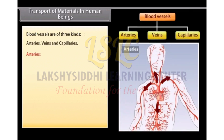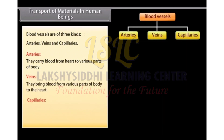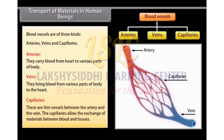Arteries carry blood from heart to various parts of the body. Veins bring blood from various parts of the body to the heart. Capillaries are thin vessels between the artery and the vein. The capillaries allow the exchange of materials between blood and tissues.